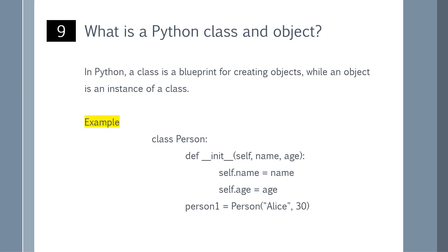What is a Python class and object? In Python, a class is a blueprint for creating objects, while an object is an instance of a class. You can refer to the example shown on the screen.